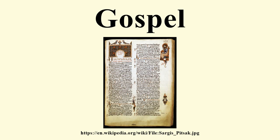The Gospel of John represents Jesus as an incarnation of the Eternal Word, who spoke no parables, talked extensively about himself, and did not explicitly refer to a second coming. Jesus preaches in Jerusalem, launching his ministry with the cleansing of the temple. He performs several miracles as signs, most of them not found in the synoptics. The Gospel of John ends: 'And there are also many other things which Jesus did, the which, if they should be written every one, I suppose that even the world itself could not contain the books that should be written. Amen.'